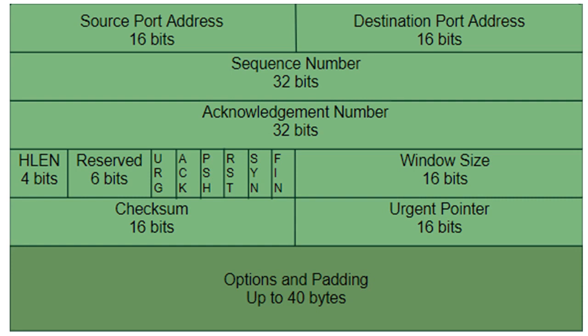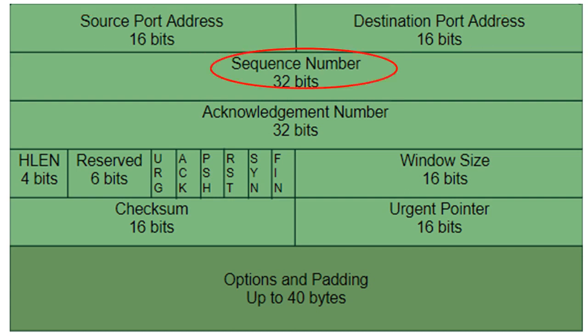The first two fields in the TCP header are the source and destination 16-bit port numbers. The source port number identifies the application process that sends the data, and the destination port number identifies the application process that is to receive the data.